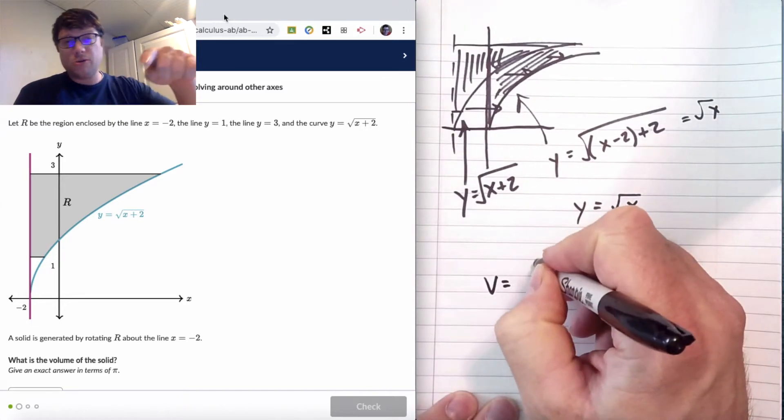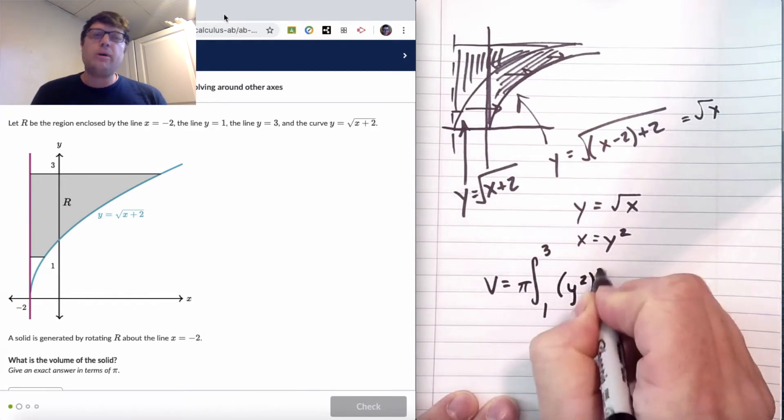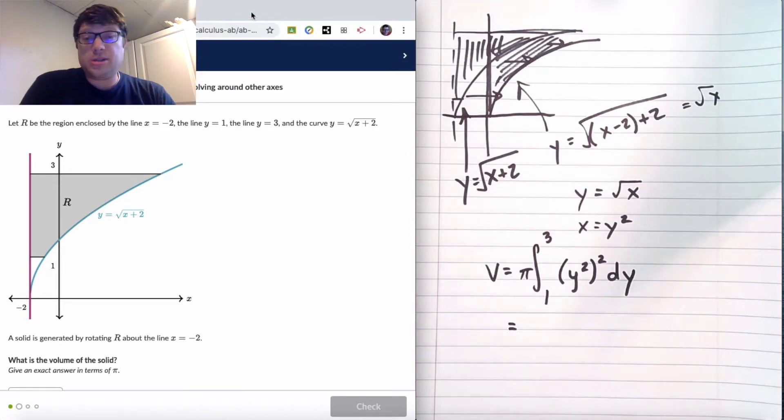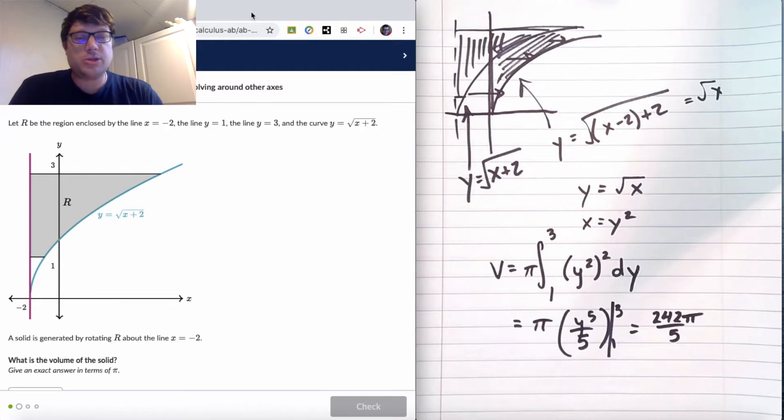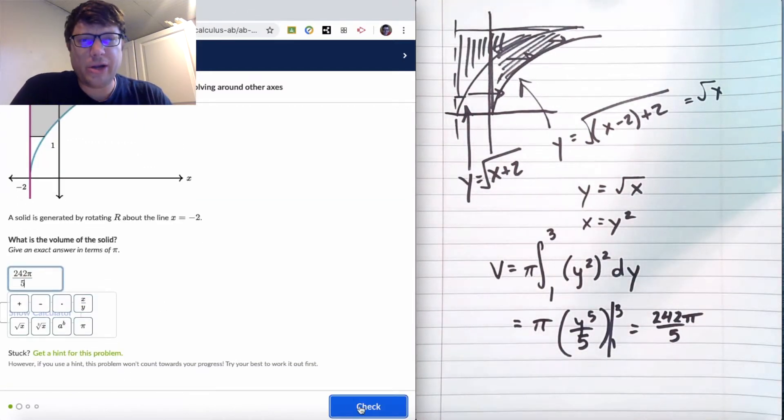Solve for X because don't forget you have to have a function that's being rotated vertically must be written as a function of Y. And then it's just a simple volume is based on type formula. Mathematically, boom! Answer is 242 pi over 5. Probably want to pause the video right here and try to catch that.